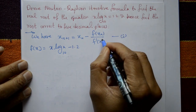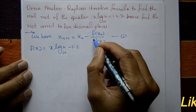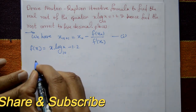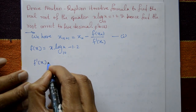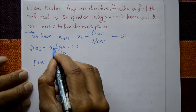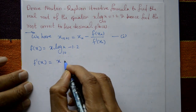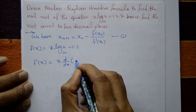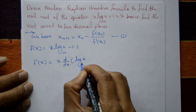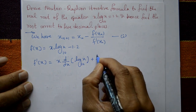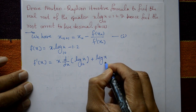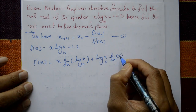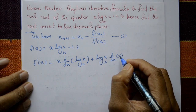Now differentiate f(x). f'(x) is equal to, using the product rule on u·v: x·(d/dx)[log₁₀(x)] plus log₁₀(x)·(d/dx)[x]. Differentiate x.